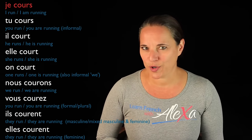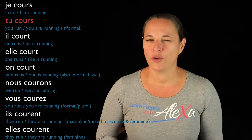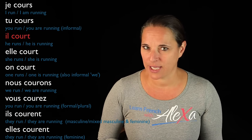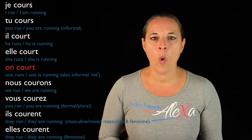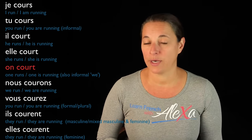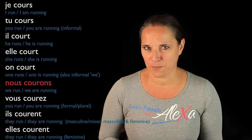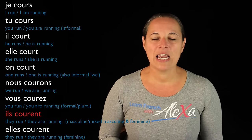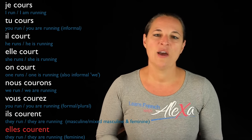Je cours — I run or I am running. Tu cours — you run or you're running. Il court — he runs or he is running. Elle court — she runs or she is running. On court — one runs or one is running. Nous courons — we run or we are running. Vous courez — you run or you're running. Ils courent — they run or they are running. Elles courent — they run or they are running, in the feminine plural.